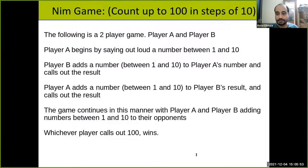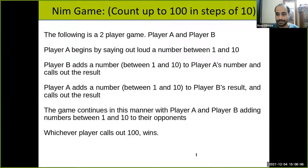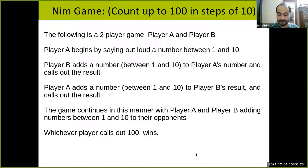So player A can say, for example, 20 after having added 9. Then B can say 30, and so on. The game carries on in this manner and whoever says the number 100 wins the game. I hope everyone understands the rules. Would anyone like to volunteer to play this game with me?